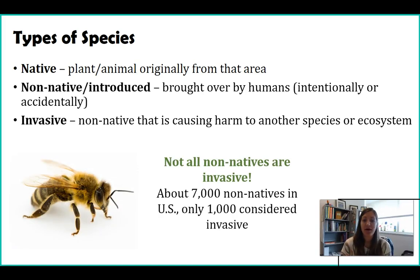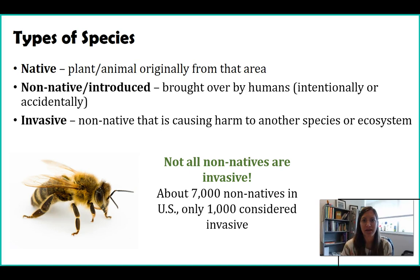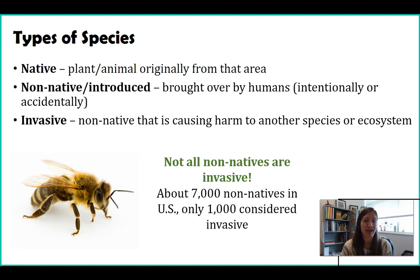For example, one introduced species is the honeybee. We introduced them centuries ago in order to help pollinate our crops, particularly when everywhere in the United States was doing agriculture. But they're not invasive — because we have so many plants that need pollinating, they're really not taking away from the native bee species. If you look at the roughly 7,000 non-native species in the United States, only about a seventh — around a thousand — are even considered invasive. Just because they're non-native does not make them invasive.